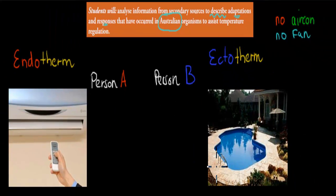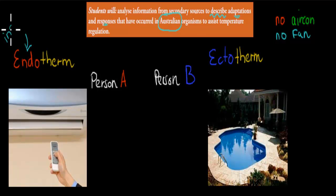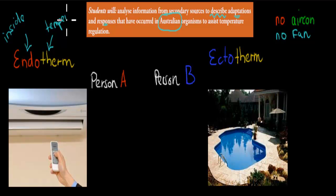I'm going to go over what an adaptation is in a second, but before I start, I'll go over those two terms again: endotherms and ectotherms. An endotherm is something that can maintain its internal environment. 'Endo' means inside, and 'therm' means temperature. So an endotherm is something that can keep its inside temperature — its body temperature — constant by itself.